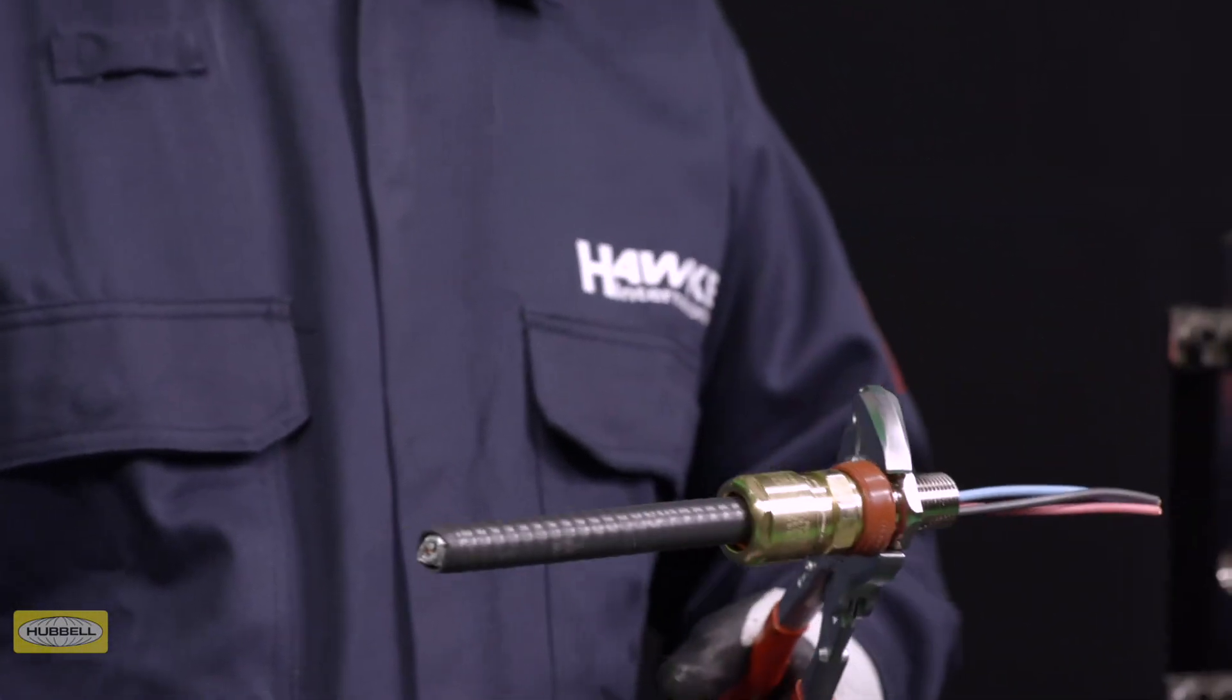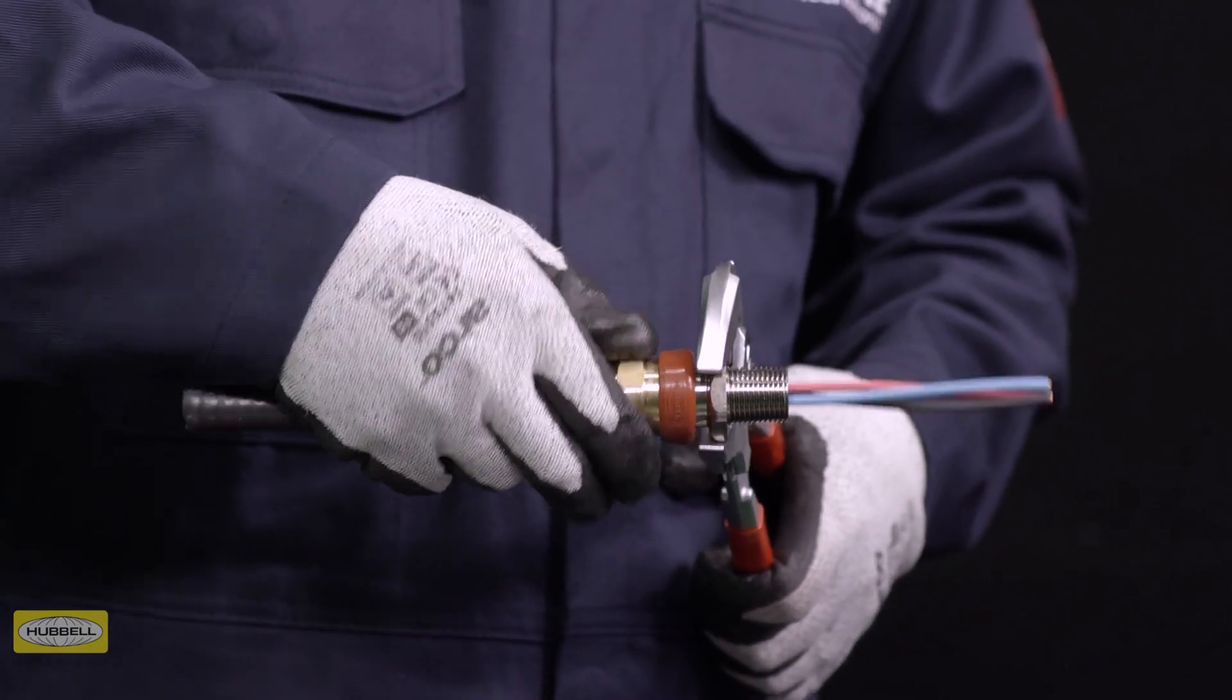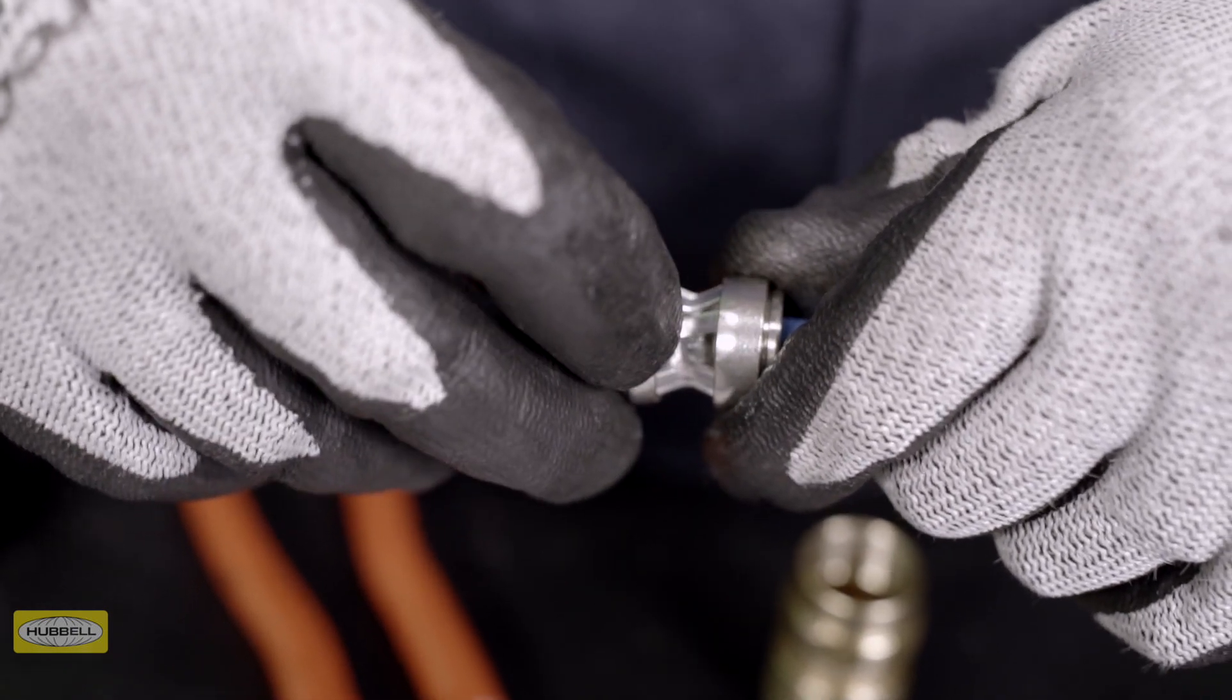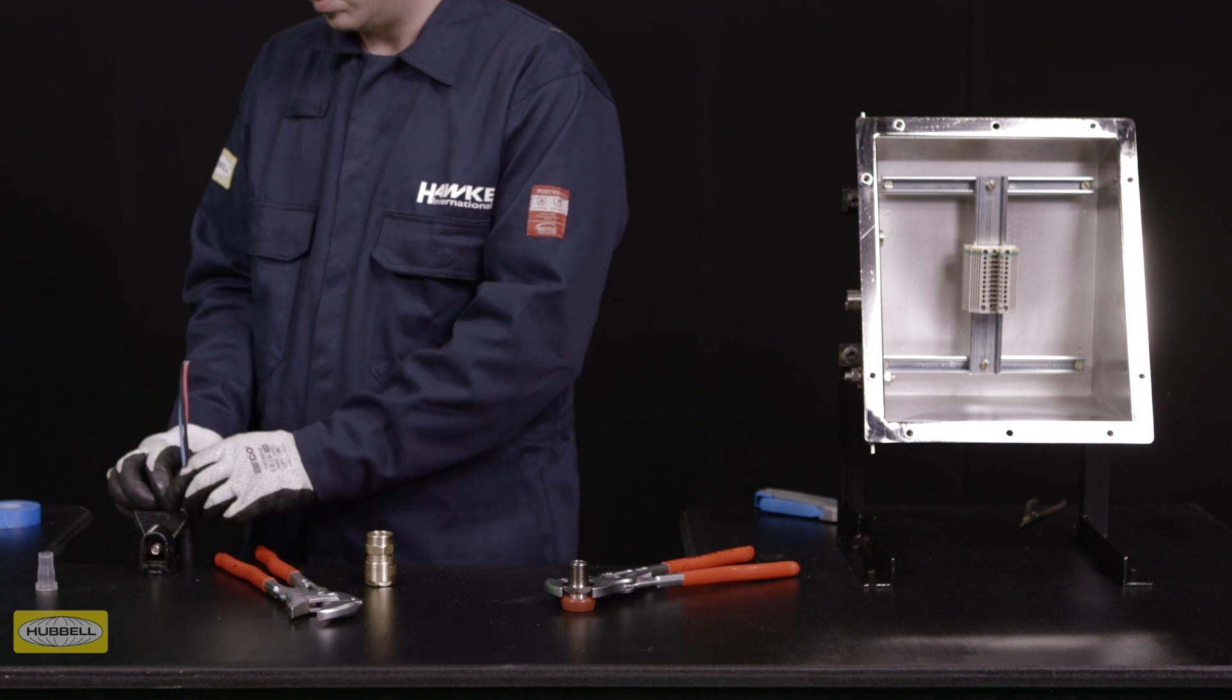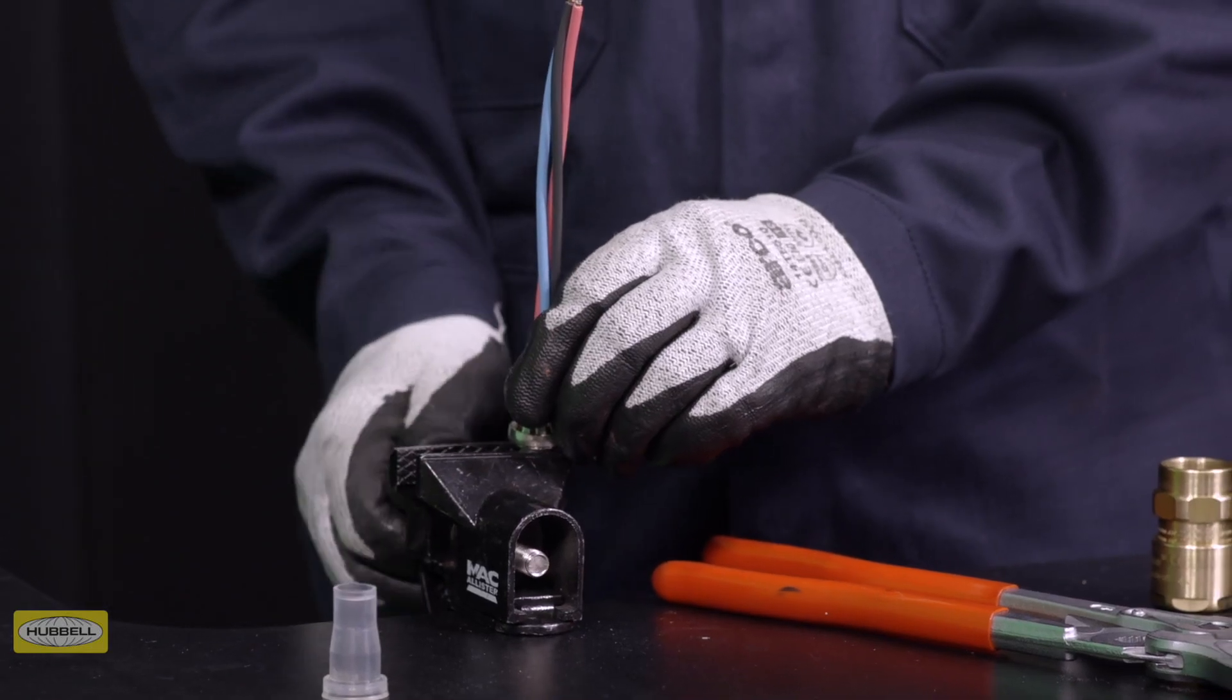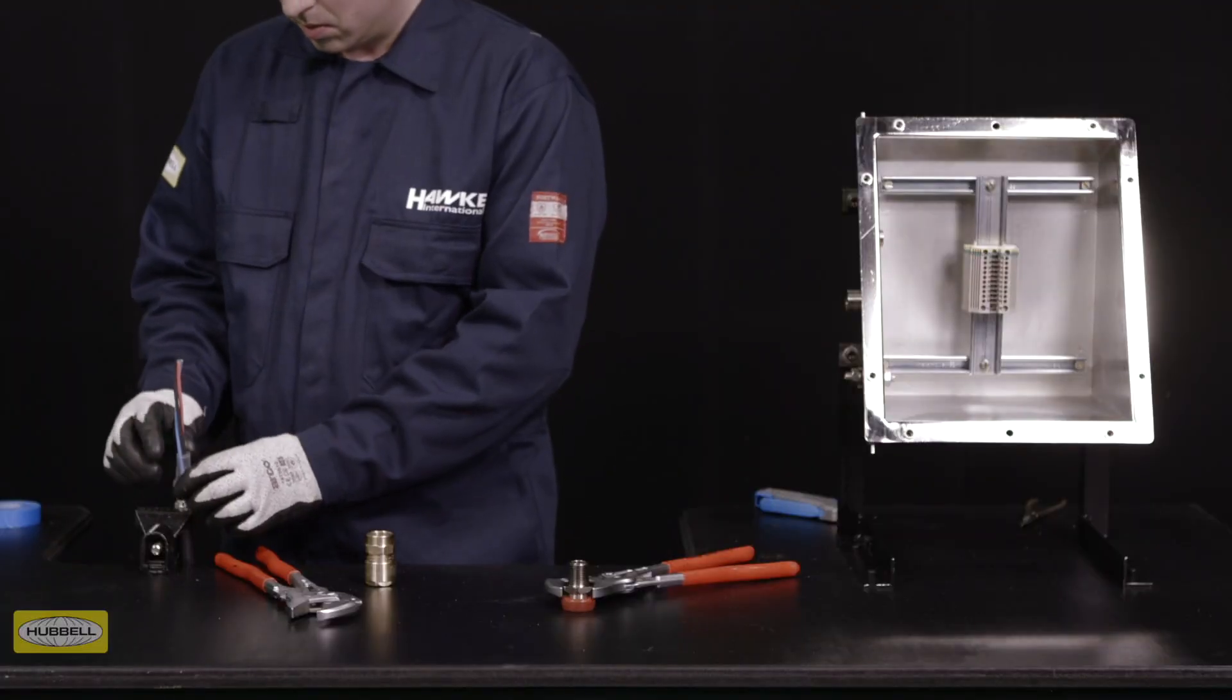Unscrew the middle nut and visually inspect that the Diablo has adequately clamped to the metal clad sheath. If this isn't satisfactory, repeat the previous step. Check that the resin barrier is sealing on the taped cores and fit the pot. Your assembly is now ready for compound.